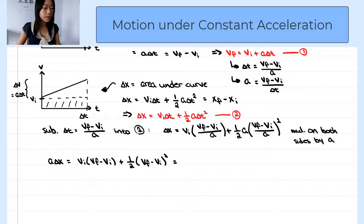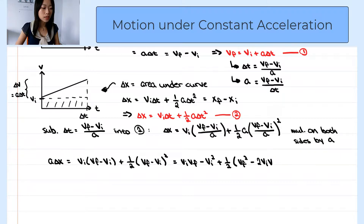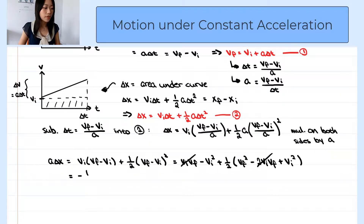Let's expand the right-hand side. This equals initial velocity times final velocity minus initial velocity squared, plus half times (final velocity squared minus 2 times initial velocity times final velocity plus initial velocity squared). The middle terms cancel out, and we are left with negative half of initial velocity squared plus half of final velocity squared. From here we get the third kinematic equation.